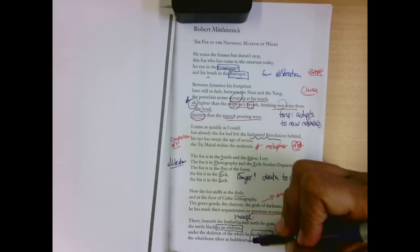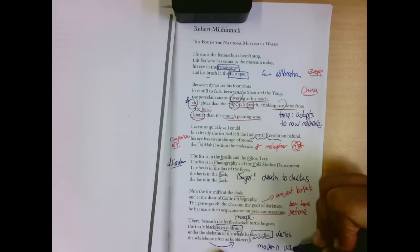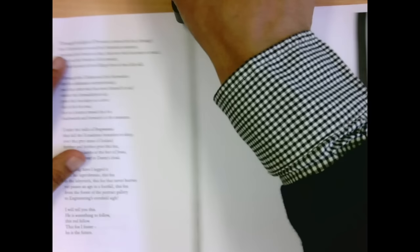The whale, silver as bubble wrap. The comparisons are modern, unusual, and reflect the speaker making connections perhaps he wouldn't have made had the fox not shown up. Maybe he wouldn't really consider these. Maybe it would just be a whale bone, not a whale bone silver as bubble wrap. Also, that silver as bubble wrap makes me think of Andy Warhol.